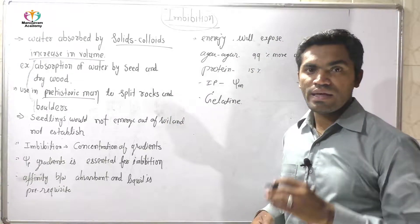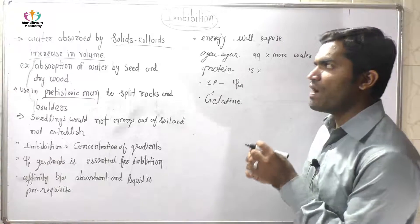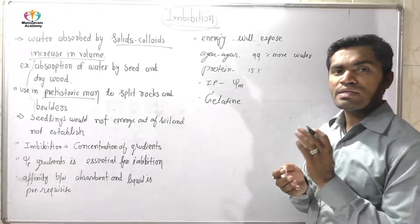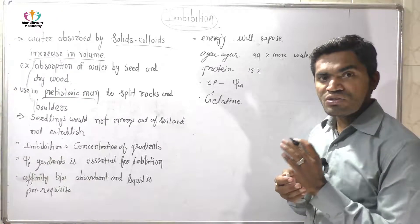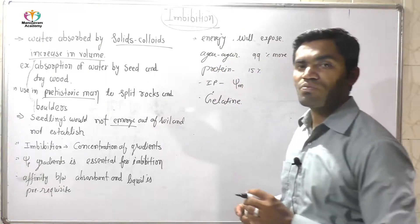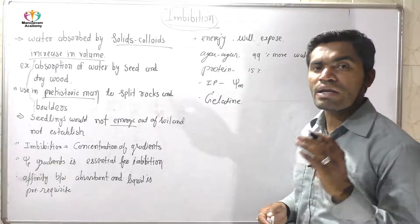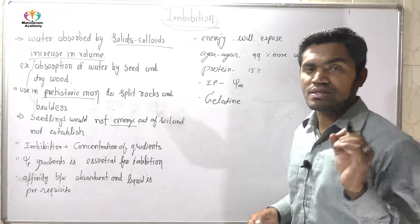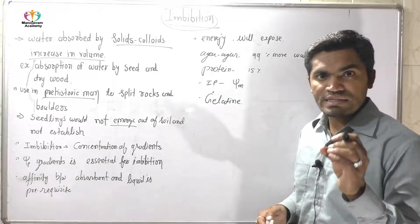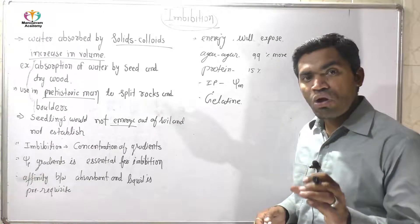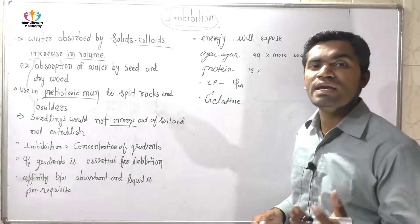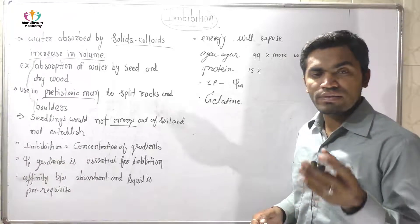Due to the presence of imbibation pressure, a seed can germinate. Without imbibation pressure, a seed would not emerge out of the soil, and the seed cannot establish in soil. Because of imbibation pressure, the seed establishes in soil, and that is why the seed creates root and stem from its side.